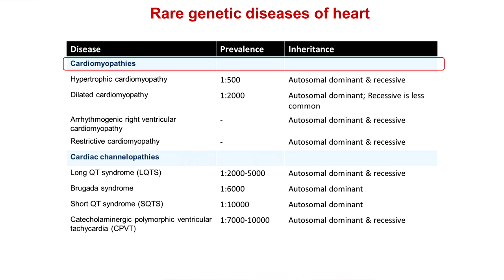Under the category of cardiomyopathies, we have dilated cardiomyopathy, hypertrophic cardiomyopathy, restrictive cardiomyopathy, and arrhythmogenic right ventricular cardiomyopathy. In cardiac channelopathies, we have several types, including long QT syndrome, Brugada syndrome, CPVT, and ARVC, which comprise major categories. There are different patterns of inheritance: autosomal dominant, autosomal recessive, X-linked, or mitochondrial disorders. The prevalence of these disorders is very low, which is why they fall under rare genetic disorders of the heart.